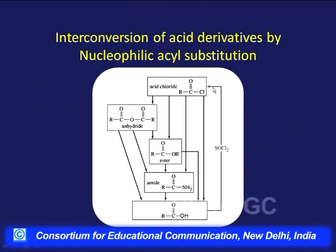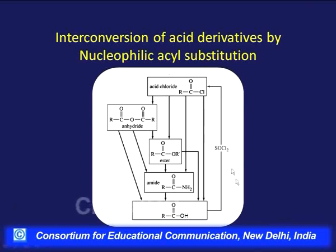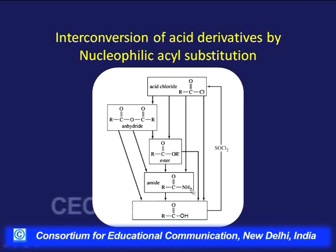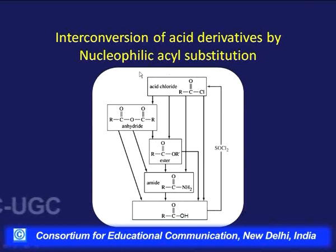This chart shows the replaceability of different groups we discussed previously. Chlorine in acid chlorides can be easily displaced by NH₂, alcohols, or acids, converting them into amides, esters, and anhydrides, or hydrolyzed to carboxylic acids. Amides are the most stable and cannot be converted back into acid chlorides, esters, or anhydrides — only hydrolyzed to carboxylic acids. This stability forms the basis for nucleophilic acyl substitution.